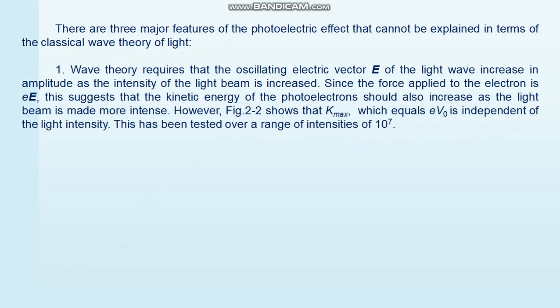Because the photoelectric effect for visible or near-visible light is largely a surface phenomenon, it is necessary in experiments to avoid oxide films, grease, or other surface contaminants. There are three major features of the photoelectric effect that cannot be explained in terms of the classical wave theory of light. First, wave theory requires that the oscillating electric vector E of the light wave increase in amplitude as the intensity of the light beam is increased. Since the force applied to the electron is eE, this suggests that the kinetic energy of the photoelectrons should also increase as the light beam is made more intense. However, Figure 2.2 shows that K_max, which equals eV₀, is independent of light intensity. This has been tested over a range of intensities of 10⁷.